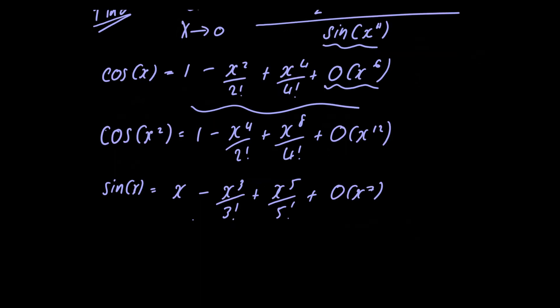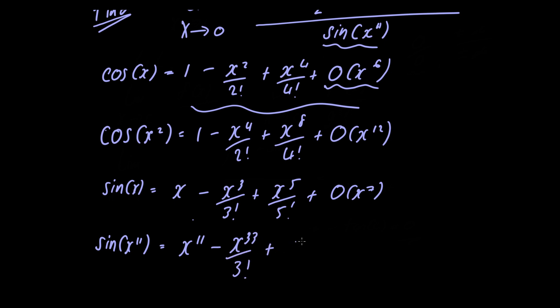We have sine of x to the 11th power, so wherever we see x we're going to insert x to the 11th power. So sine of x to the 11th power equals x to the 11th power minus x to the 33rd divided by 3 factorial, plus x to the 55th divided by 5 factorial, plus O of x to the 77th power.